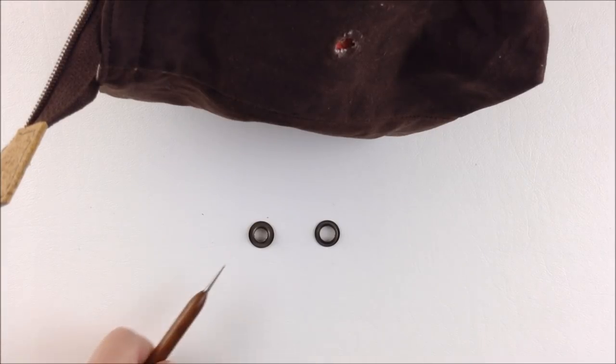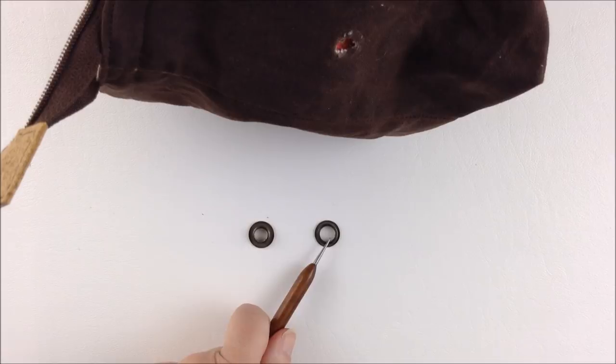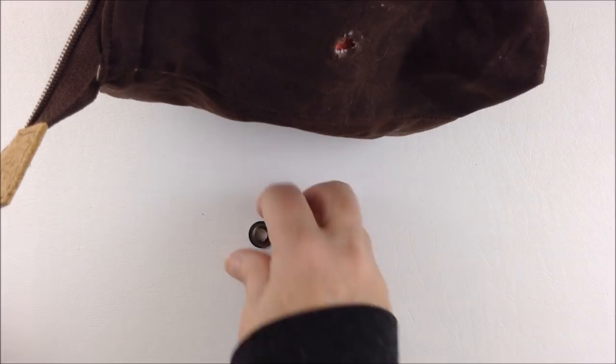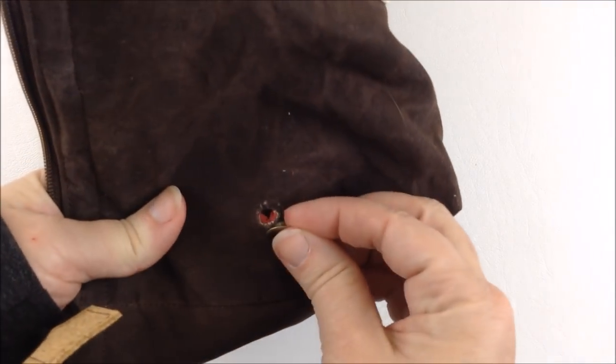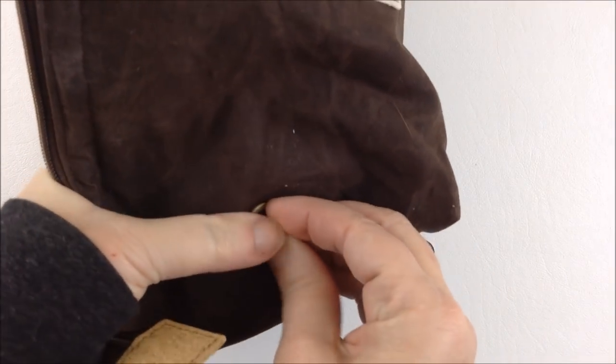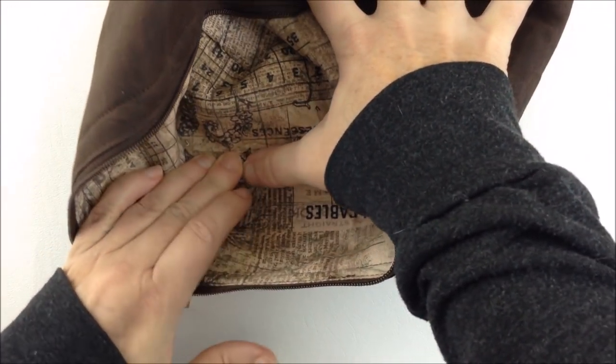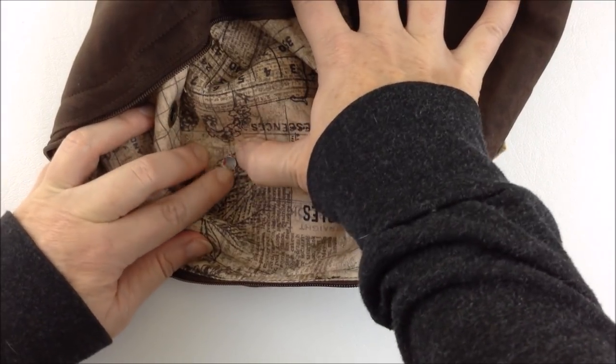Just as a tip with your eyelets you'll notice that the eyelets have two different sized holes. This one's smaller, this one's larger. You'll want to insert the one with the smaller hole from the outside.